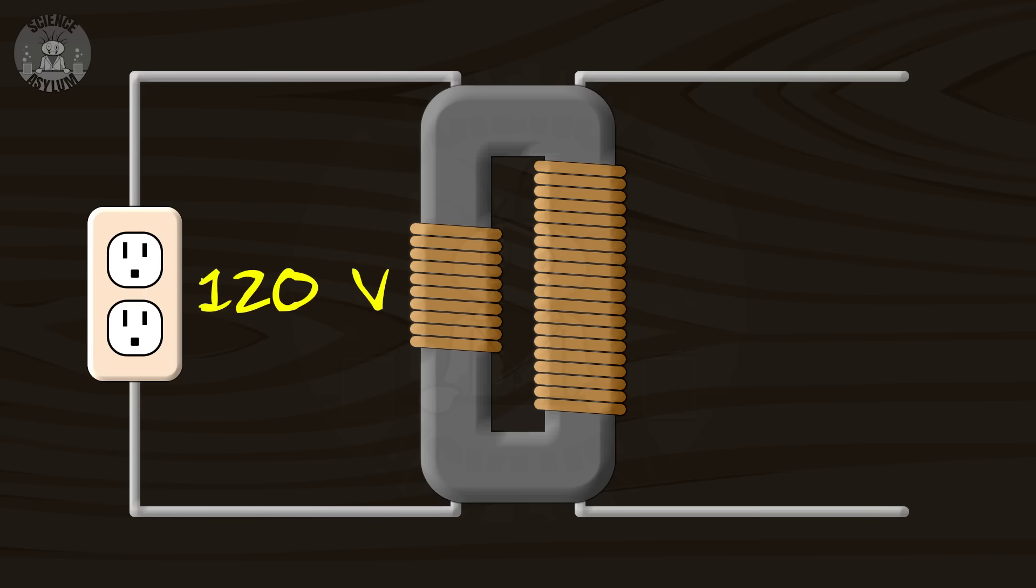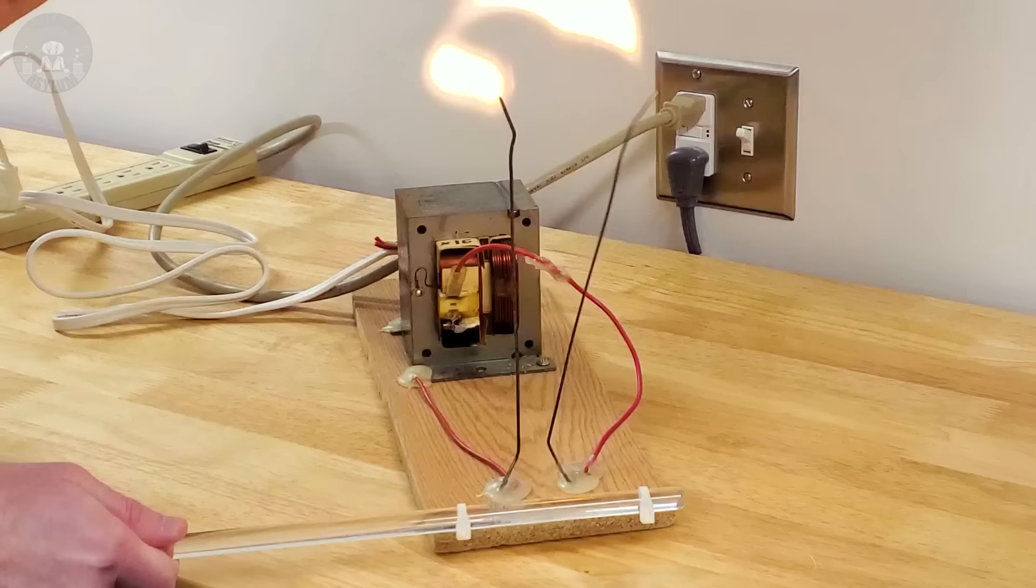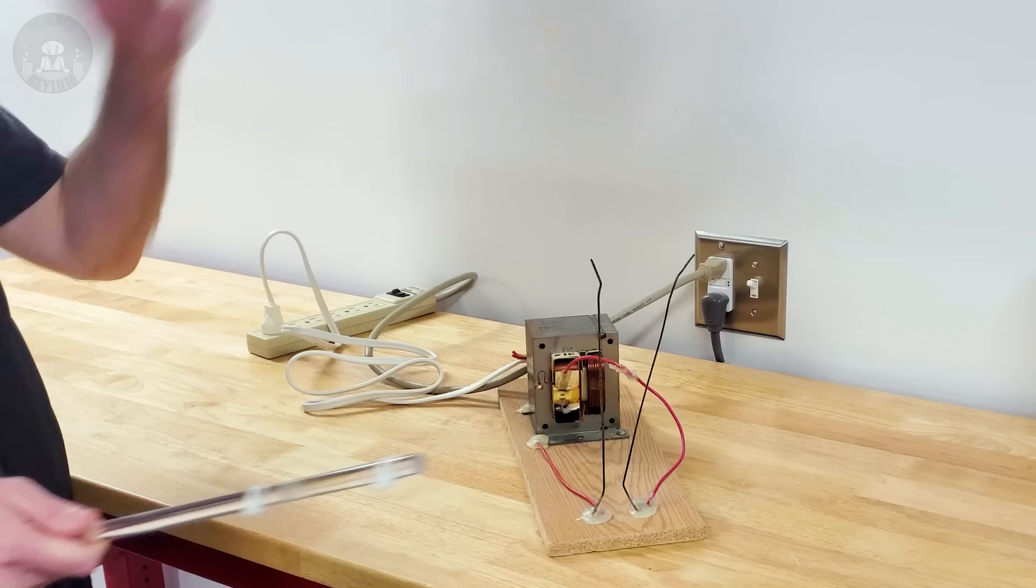It takes the 120V from the wall and turns it into about 2000V. At least, that's the wave average. And there's nothing limiting the current, which means I can do this.